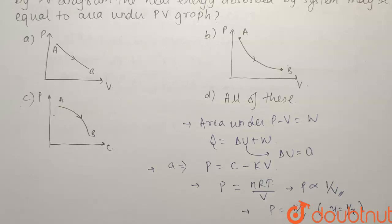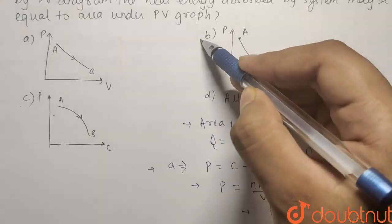But if I talk about option B, it is clearly a graph of Y equals to 1 by X. So option B is going to be correct.